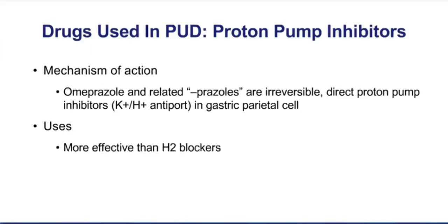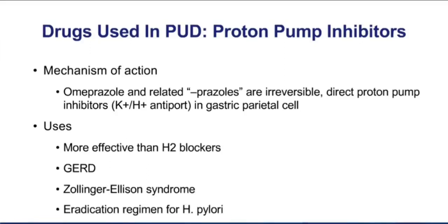Overall, these drugs are considered more effective than H2 blockers in peptic ulcer disease, in GERD, in Zollinger-Ellison, and they're also useful for eradication of H. pylori. Back in the antimicrobial section, we covered antibiotics that are used for H. pylori eradication.